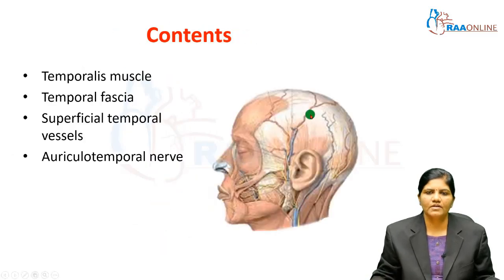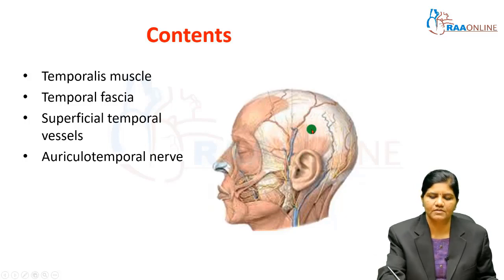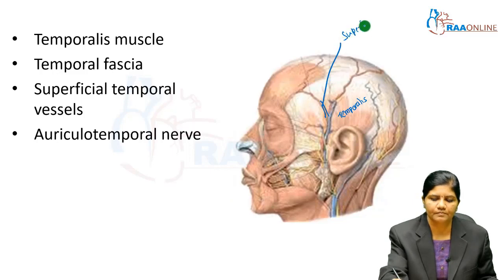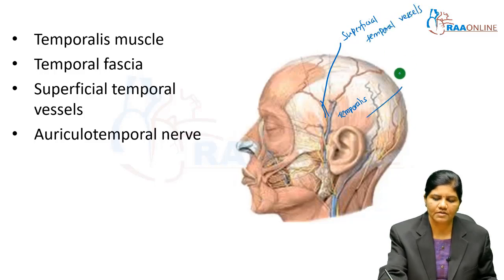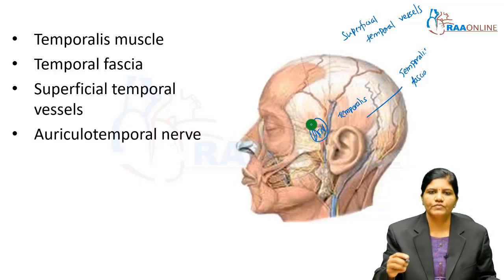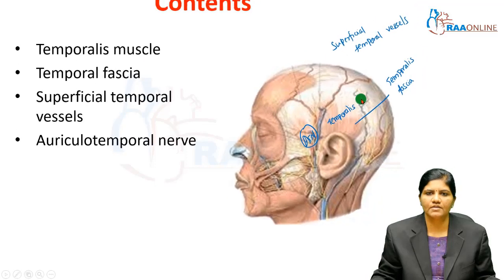The contents of the temporal fossa include the temporalis muscle, which is covered by the temporal fascia. Superficial to the temporal fascia are the superficial temporal vessels and the auriculotemporal nerve. The temporalis muscle also takes origin from the temporal fascia.